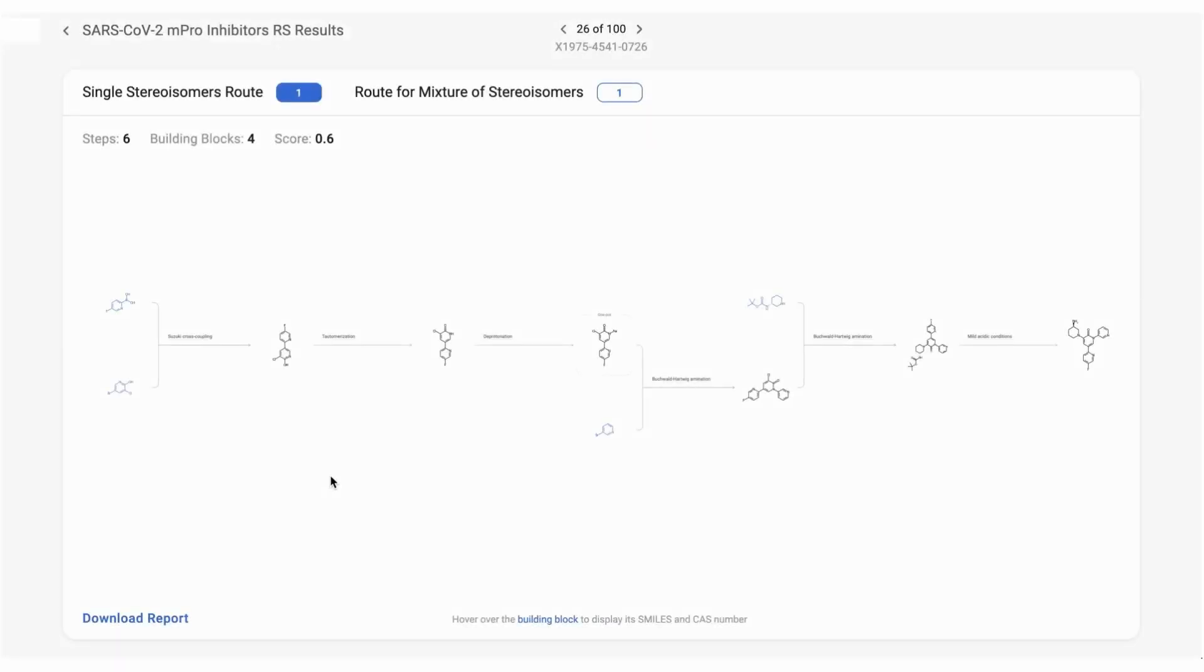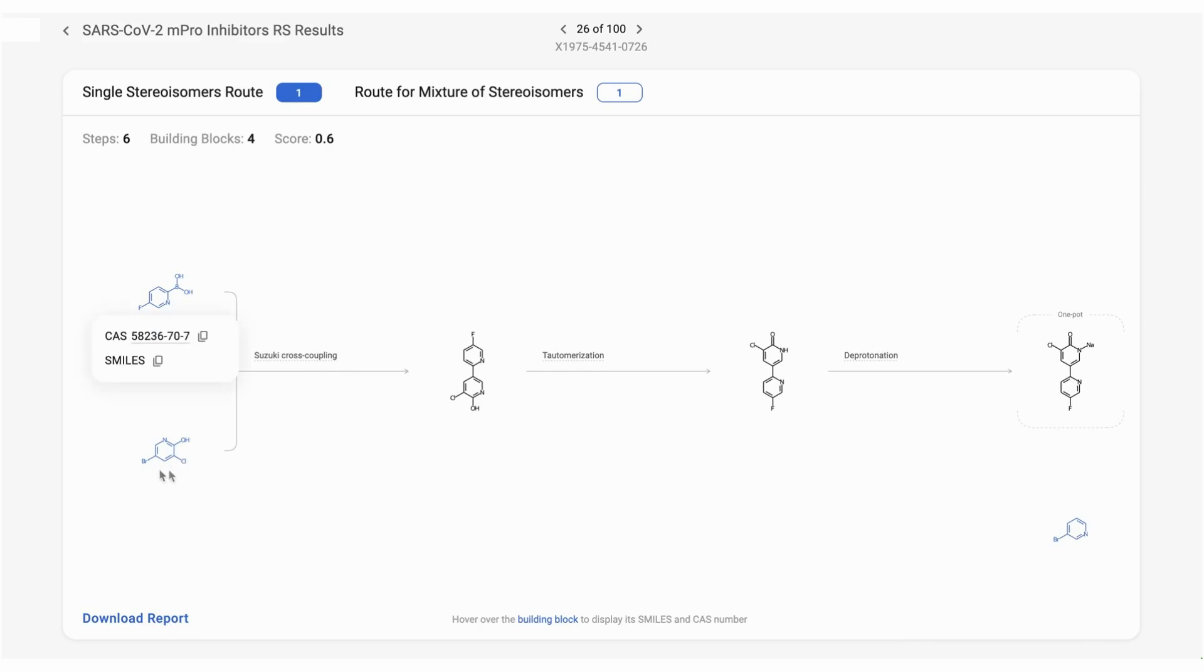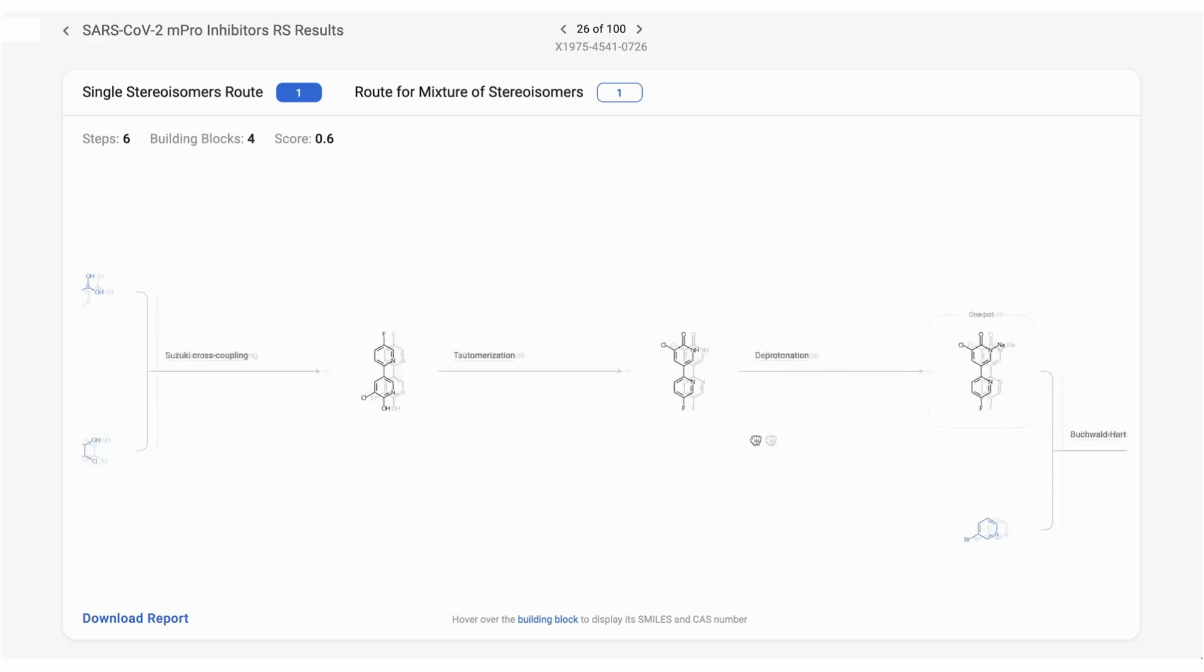This final example demonstrates all of the previously introduced concepts in one synthetic scheme. The first step between the two halogens has a regioselectivity issue, which the engine has already accounted for. Therefore, it has opted to use the more reactive bromine for this disconnection.